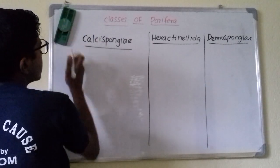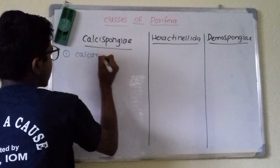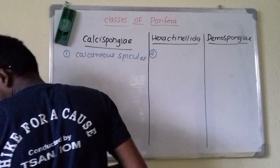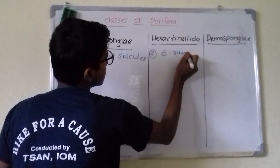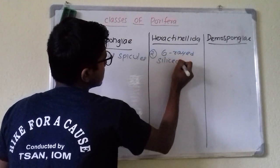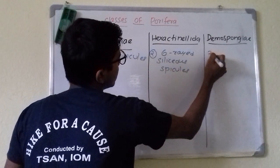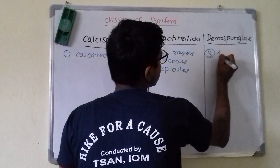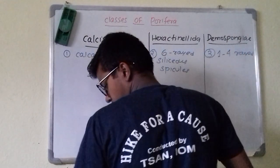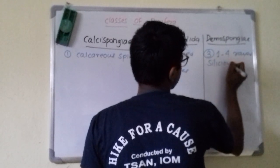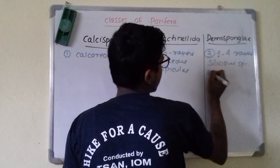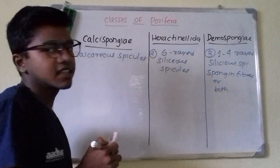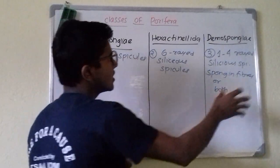Now comparing the skeleton of each class: in Calcispongia, the skeleton is made up of calcareous spicules. In Hexactinellida, it is made up of siliceous spicules. Whereas in Demospongia, the skeleton is a combination of both calcareous and siliceous — made up of one to four rayed siliceous spicules or spongin fibers, or both.